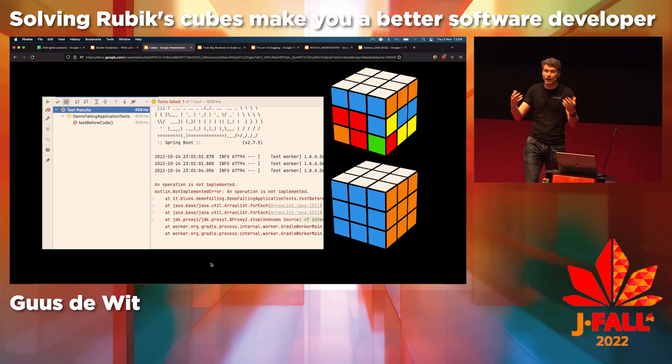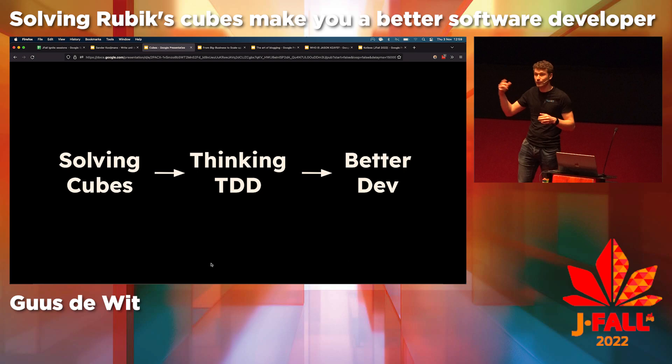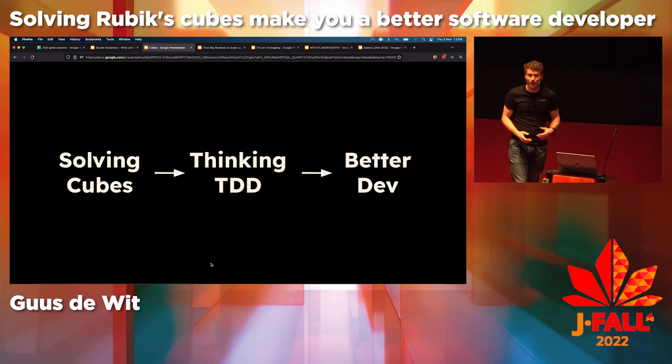In cubing you get it for free — you automatically see that you made a mistake. In software development it's not always that clear, so make sure to write your tests. If you don't, you won't notice any mistakes. And even better: write your test first, then your code. My colleagues will be annoyed that I tricked them into yet another TDD talk — but at least now they have the option. You can either do TDD, or you can learn how to solve a cube and then you'll want to do TDD.